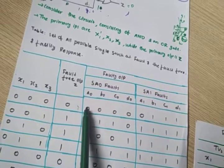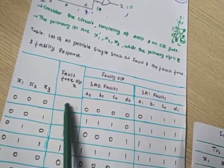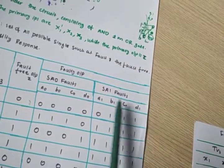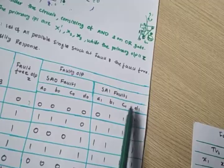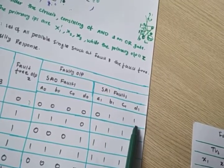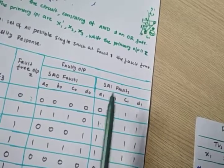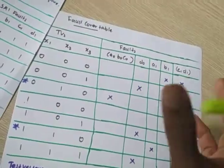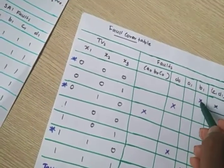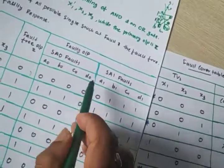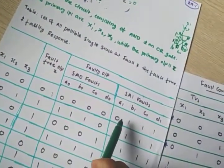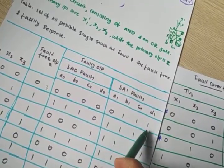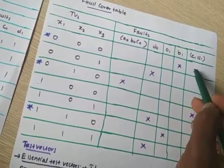Consider test vector 0,0,0: the fault-free output is 0. For B1, C1, D1 — stuck-at-1 — the output comes as 1 but we expect 0, so these are faulty states. So we cross B1, C1, D1 for this test vector.